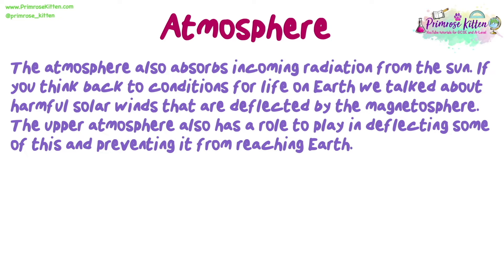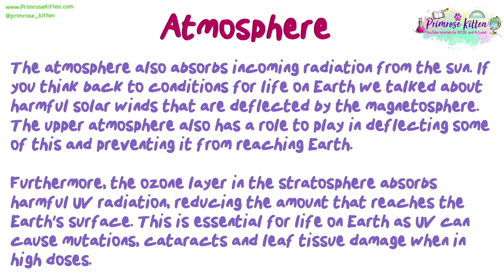The atmosphere also absorbs incoming radiation from the Sun. Thinking back to conditions for life on Earth, we talked about harmful solar winds that are deflected by the magnetosphere. The upper atmosphere also has a role to play in deflecting some of this and preventing it from reaching Earth. Furthermore, the ozone layer in the stratosphere absorbs harmful UV radiation, reducing the amount that reaches the Earth's surface. This is essential for life on Earth as UV can cause mutations, cataracts and leaf tissue damage when in high doses.